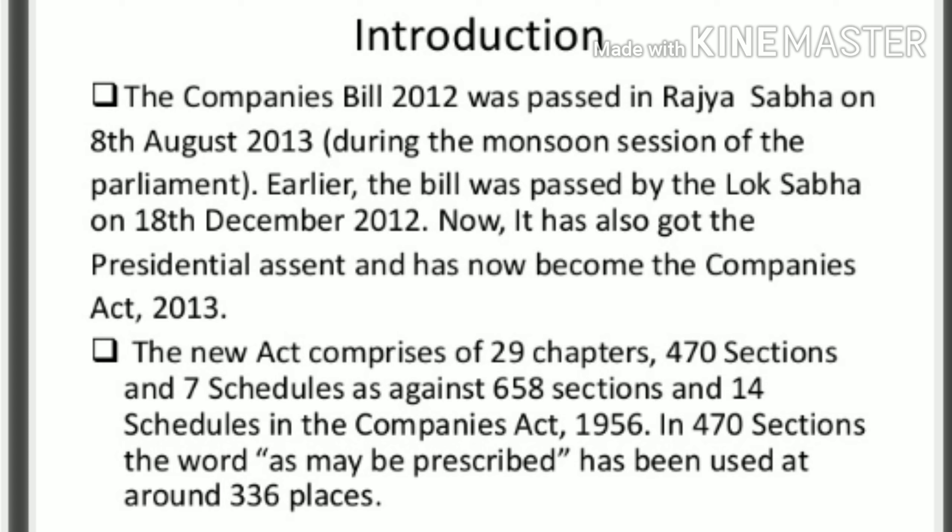The new Act comprises 29 chapters, 470 sections, and 7 schedules. But in the Companies Act 1956, there were 658 sections and 14 schedules.